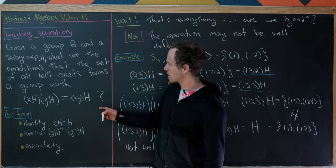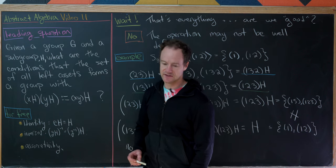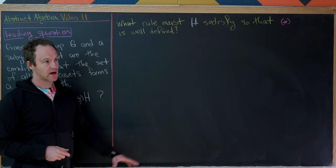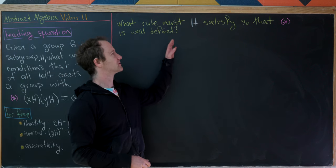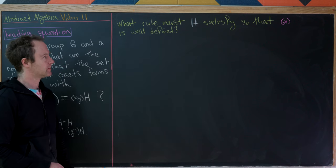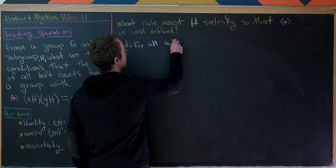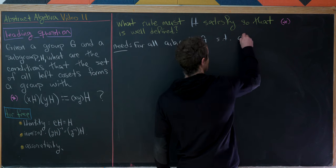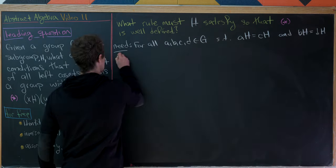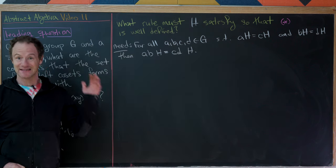That tells us there must be some restriction on the subgroup H if we want to end up with a group of cosets. We come up with the following question: what rule or rules must H satisfy so that this operation — call it the magenta star — is well-defined? That means we need the following: for all A, B, C, D in G such that AH = CH and BH = DH, we need AB·H to equal CD·H. That's exactly what we need for well-definedness.